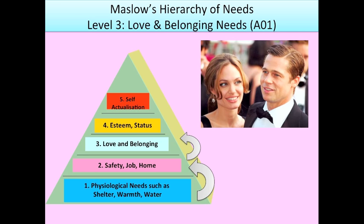Once you have your physiological and safety needs met, Maslow says you're motivated to find love and belonging, which includes things like intimacy, having children, having a family, and close friendships. Brad and Angelina, who have been married quite some time and have six children, represent the love and belonging needs.